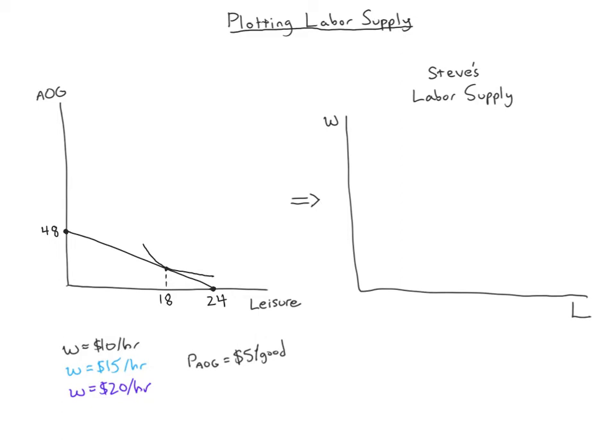Now let's think about a wage of fifteen dollars per hour. The real wage would be fifteen over five, which is three goods per hour. The 24-hour maximum leisure point never changes, but the budget constraint gets a steeper slope reflecting the higher real wage. The new maximum amount of all other goods is three times 24, which equals 72.